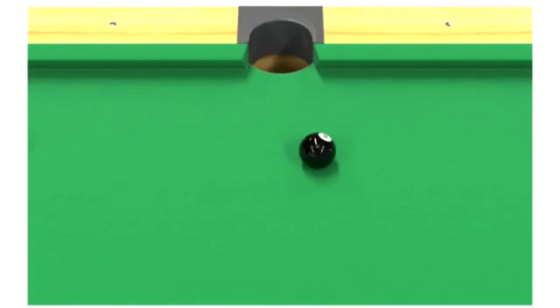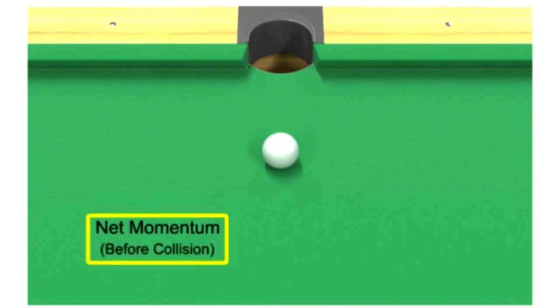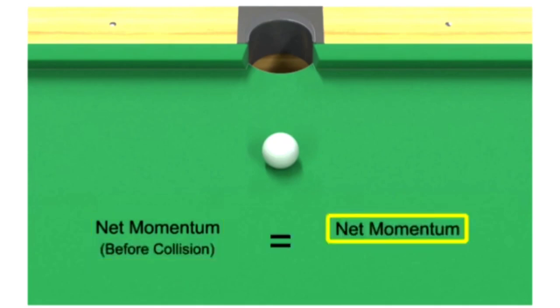When the cue ball hits the resting eight ball, it sets the eight ball in motion. Having transferred all of its momentum and kinetic energy, the cue ball comes to a rest. The net momentum of the cue ball before the collision equals the net momentum of the eight ball after the collision. Momentum and kinetic energy are transferred and conserved.